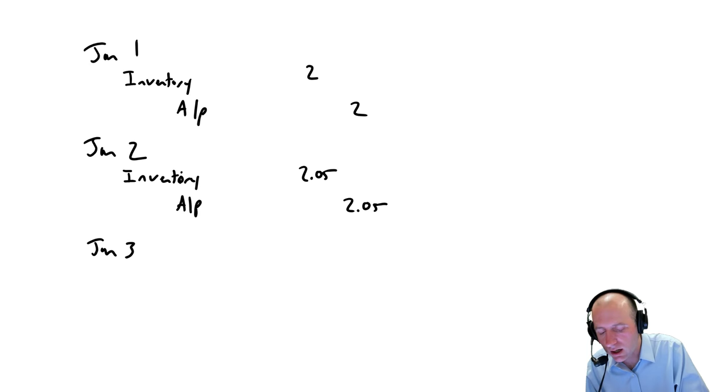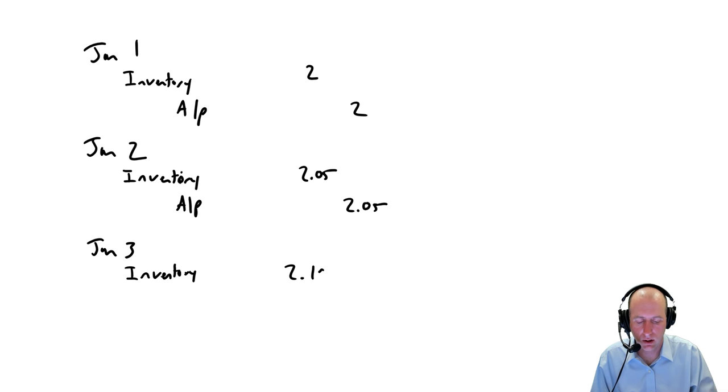On January 3rd, Walmart buys another pair of socks. And Hanes says, this is out of control, these cotton prices. And in fact, we've got to charge you $2.16 for our socks now. So Walmart goes, okay, and debit inventory, $2.16, credit AP, $2.16. So that's all my setup here.